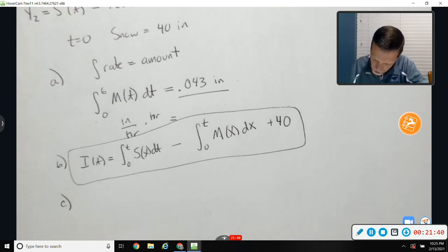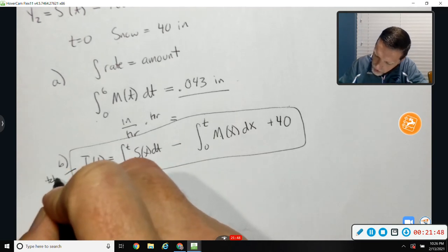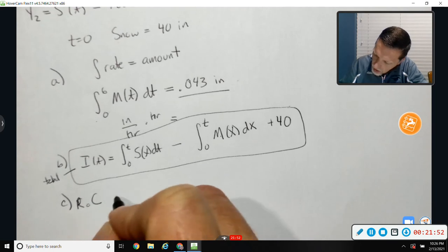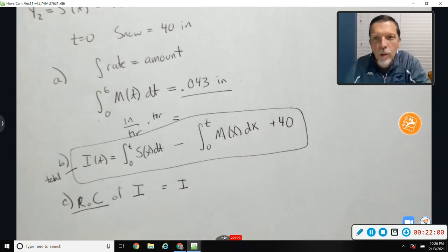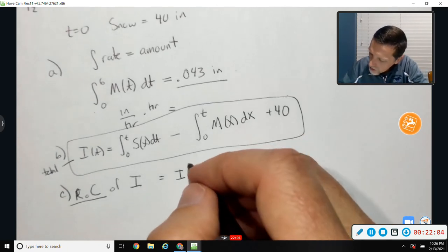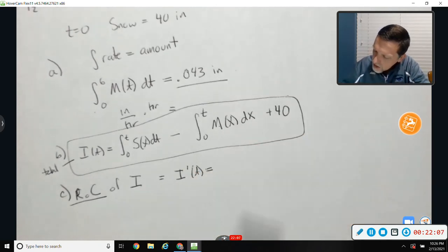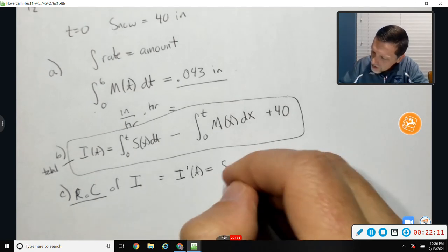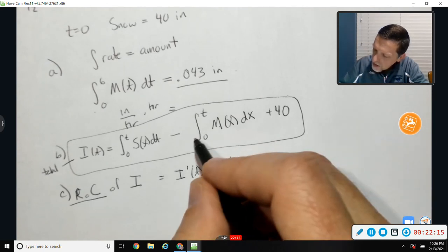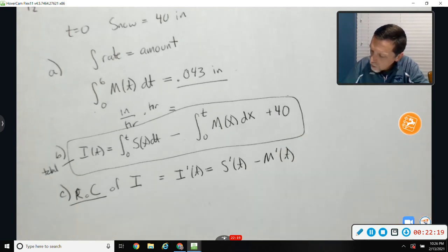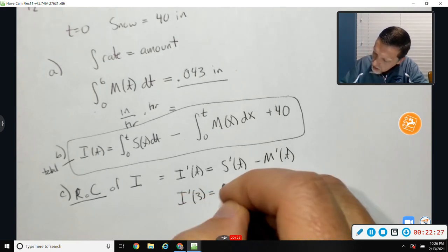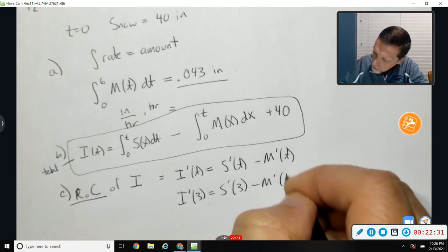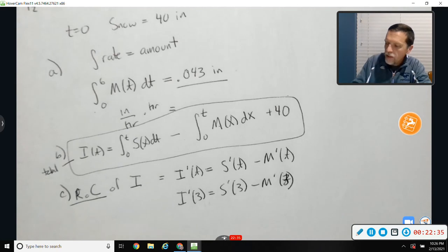Part C, find the rate of change of the total amount of snow at time 3. Well, this was the total amount of snow. So the rate of change of I, so that would be calculus rate of change. That would be, if it doesn't specify, you're in calculus, so it means calculus rate of change. Otherwise, it would have said average rate of change. So I need I prime. So if I take the derivative of the integral, I'm back to S. The derivative of the integral is M. And the derivative of 40 is 0.